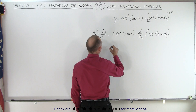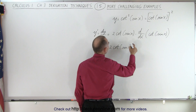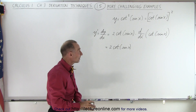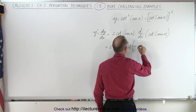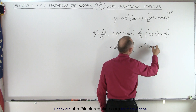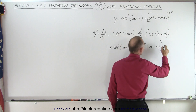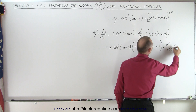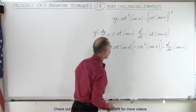This equals two times the cotangent of the sine of x times the derivative of the cotangent. Now the derivative of the cotangent is the negative cosecant squared, so times the negative cosecant squared of the sine of x. But we also have to multiply by the derivative of the argument, which is the d/dx of sine of x — that is the cosine of x.